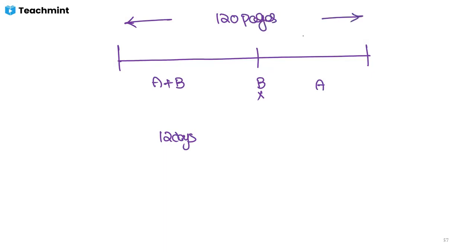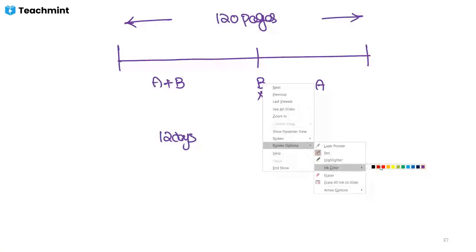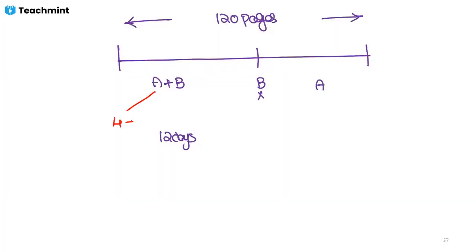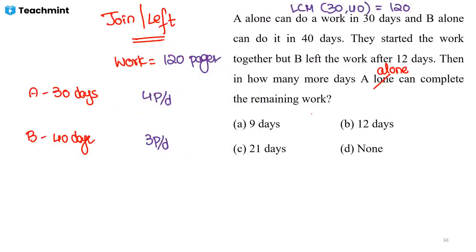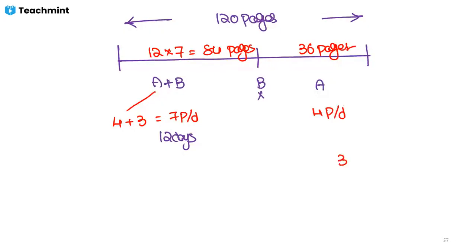Together A and B type 4 + 3 = 7 pages per day. In 12 days they complete 12 × 7 = 84 pages. Work remaining is 120 − 84 = 36 pages, which must be done by A alone at 4 pages per day. Time = 36 / 4 = 9 days.